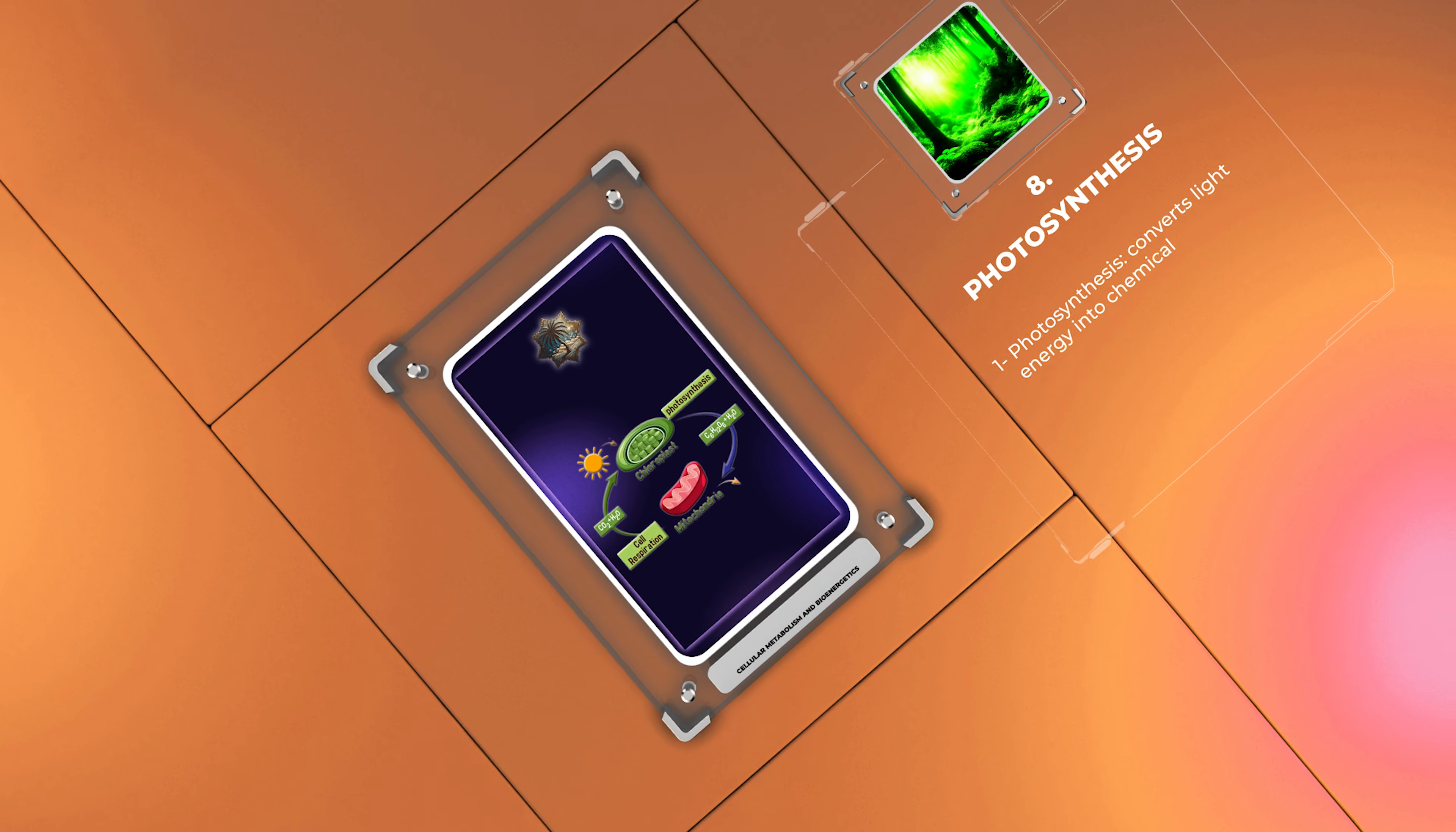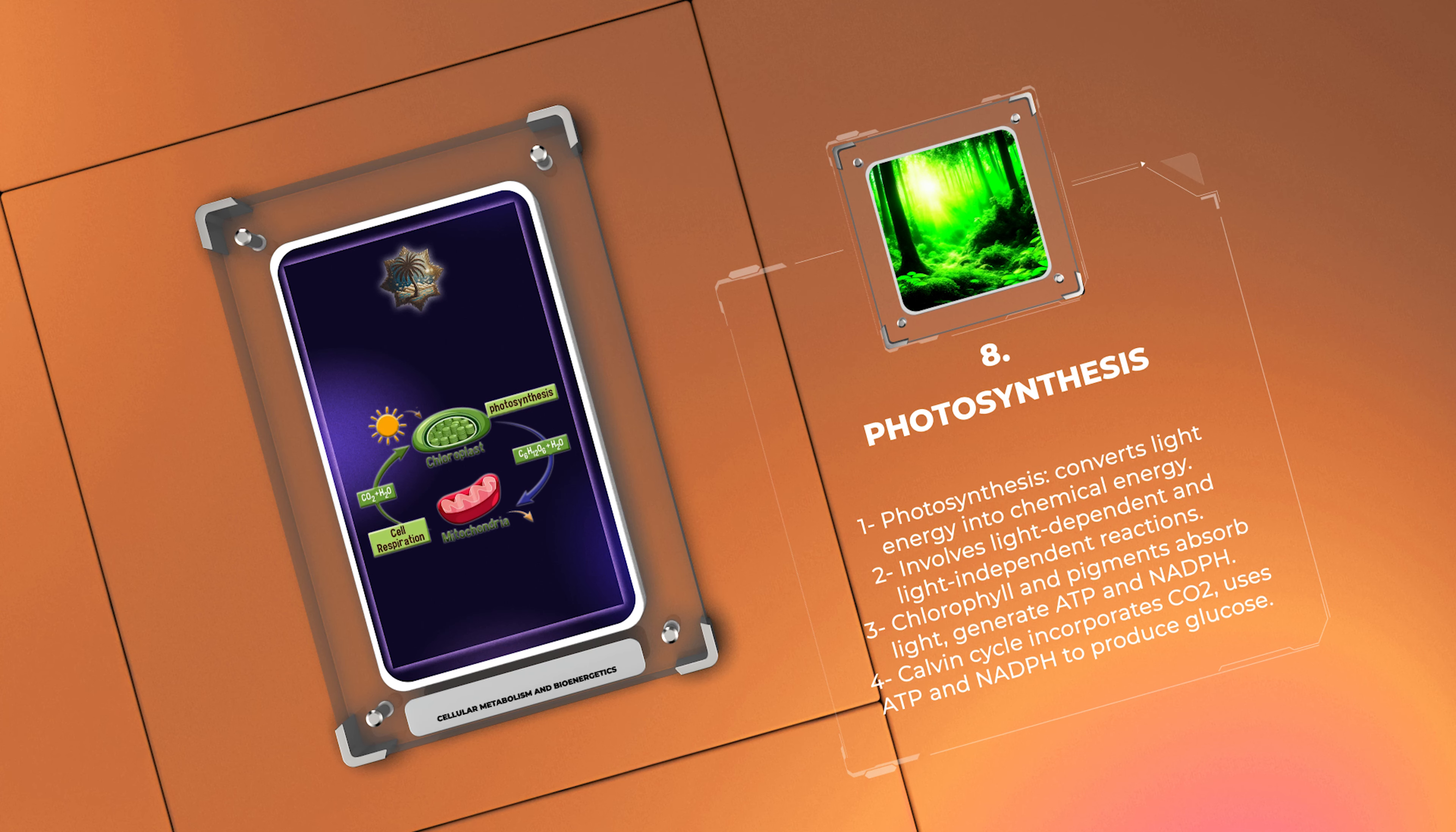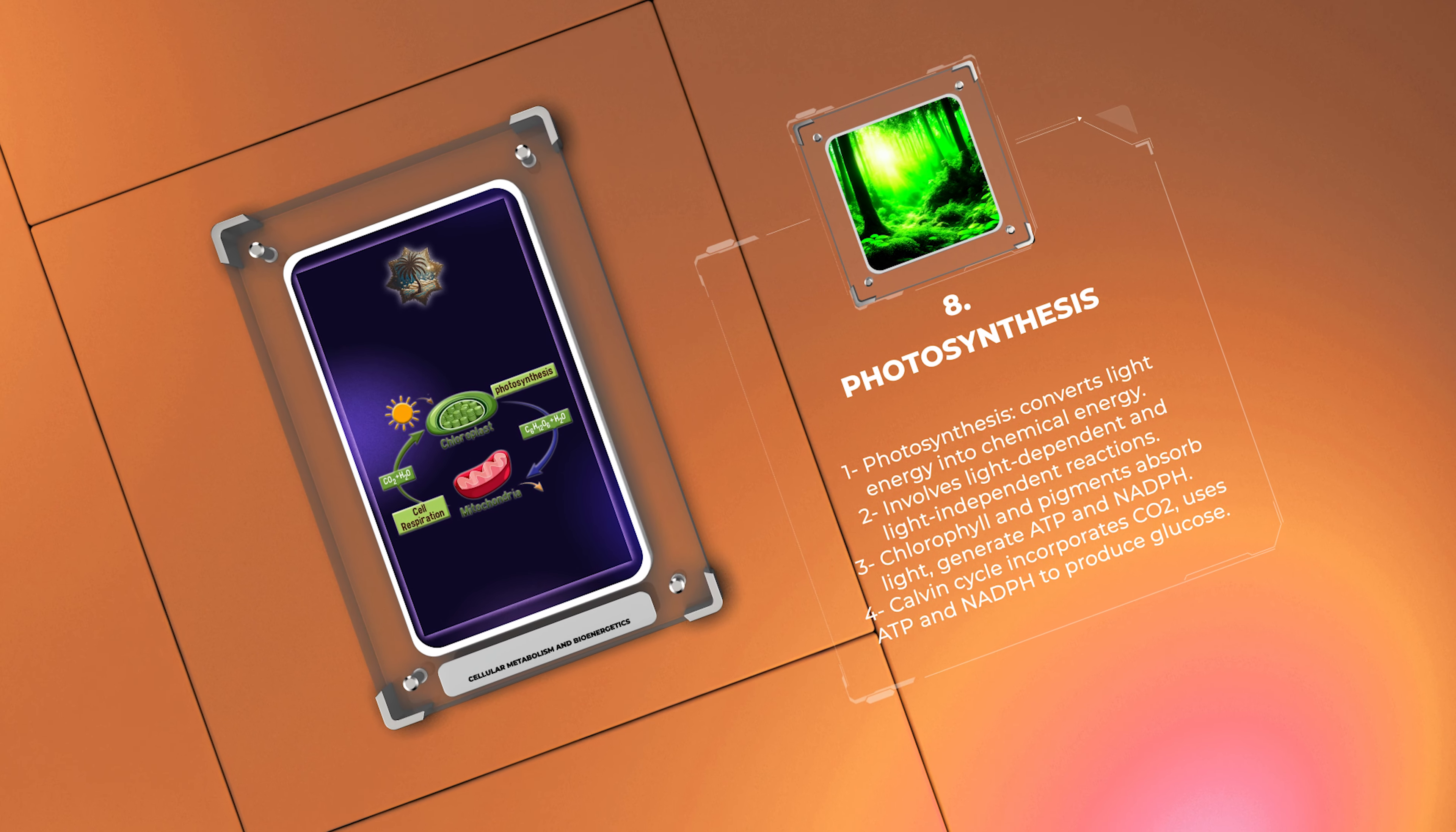Photosynthesis is the process by which plants and some bacteria convert light energy into chemical energy. It involves two stages: the light-dependent reactions and the light-independent reactions, or Calvin cycle. Light is absorbed by chlorophyll and other pigments, generating ATP and NADPH. The Calvin cycle incorporates CO2 and utilizes these ATP and NADPH to produce glucose.